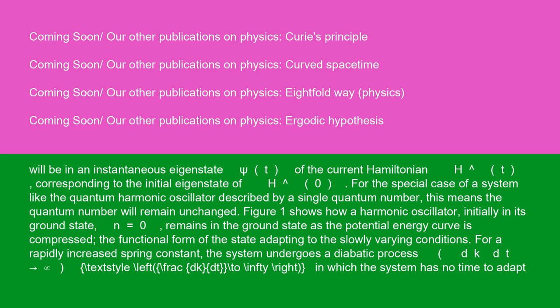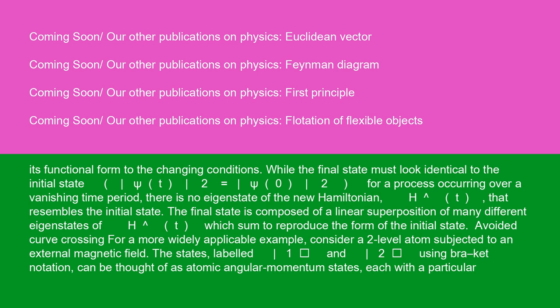For a rapidly increased spring constant, the system undergoes a diabatic process (dk/dt → ∞), in which the system has no time to adapt its functional form to the changing conditions. While the final state must look identical to the initial state — |psi(t)|² equals |psi(0)|² — for a process occurring over a vanishing time period, there is no eigenstate of the new Hamiltonian H-hat(t) that resembles the initial state. The final state is composed of a linear superposition of many different eigenstates of H-hat(t), which sum to reproduce the form of the initial state.